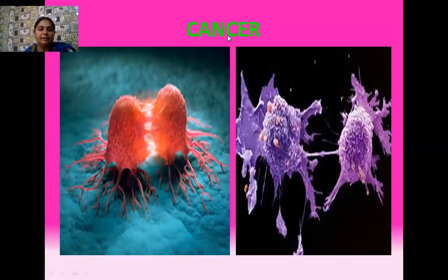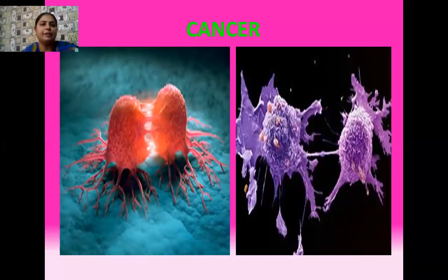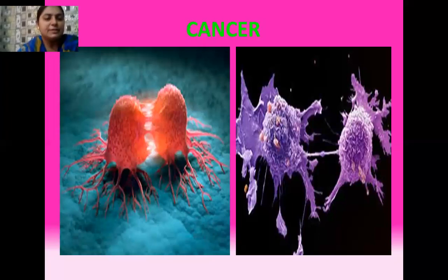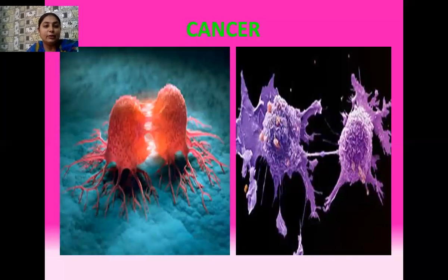Whenever the term cancer comes to mind, you must be clear that cancer is a disease which is related with abnormal growth of the cells. In living organisms, growth and differentiation of cells are the basic characteristics. All living organisms are made up of cells and these cells undergo growth and differentiation throughout their lifespan. But all of this growth and differentiation of cells happens in a controlled, coordinated manner. But in the disease cancer, the cells keep on dividing again and again, and in this way masses of cells are formed that accumulate. Such a large amount of cells is not required by the body.